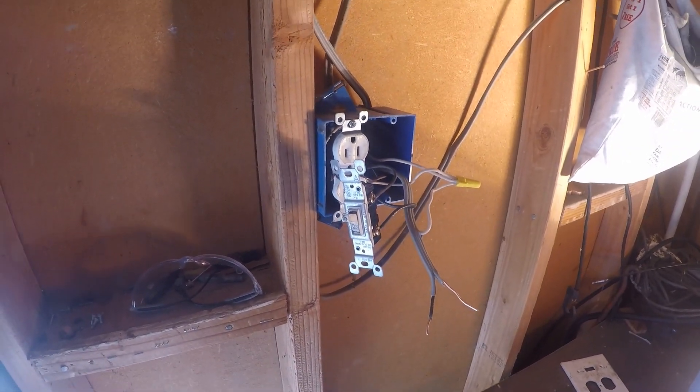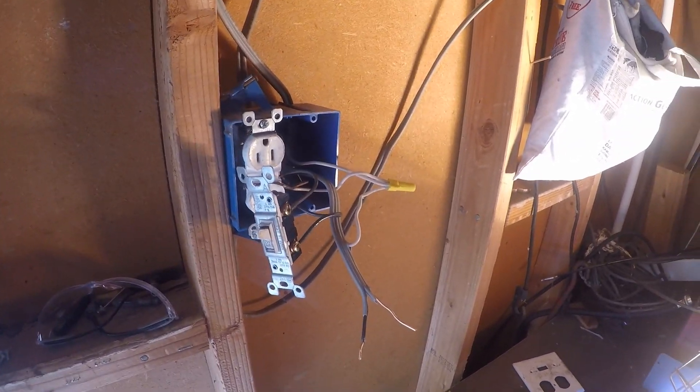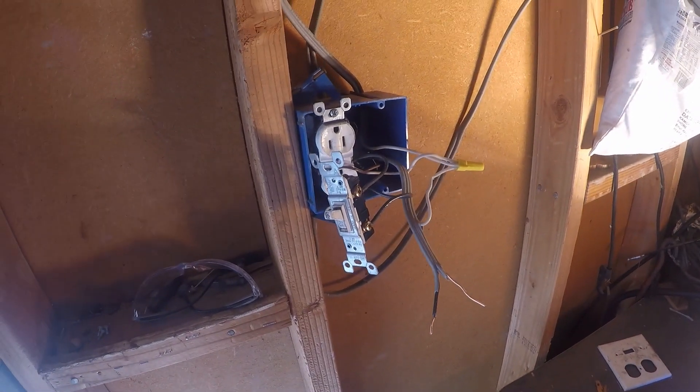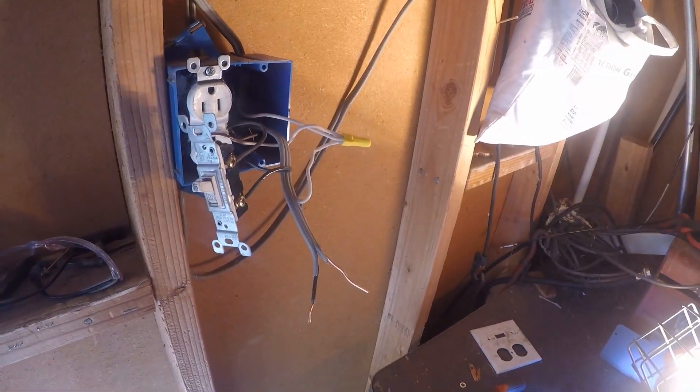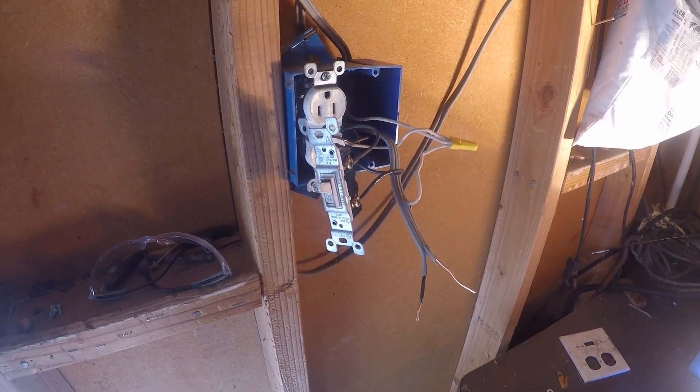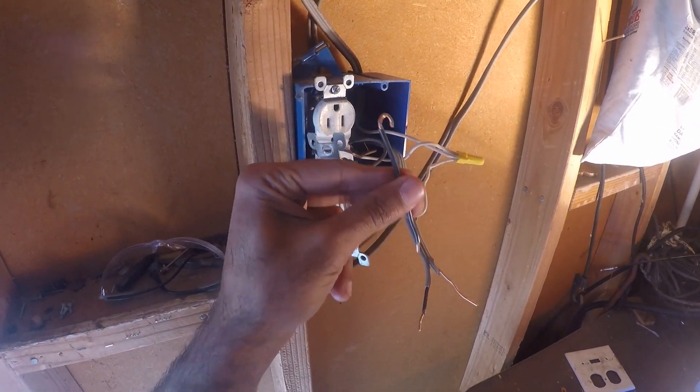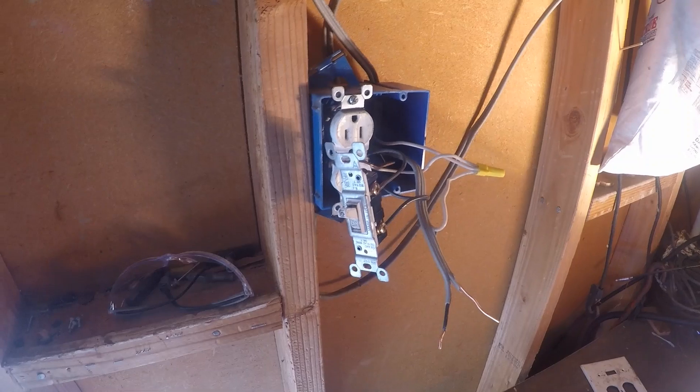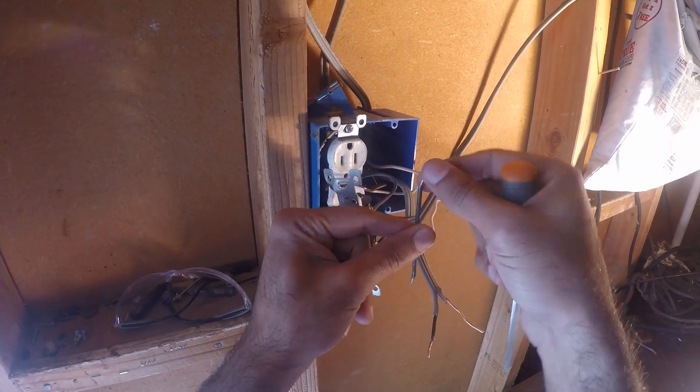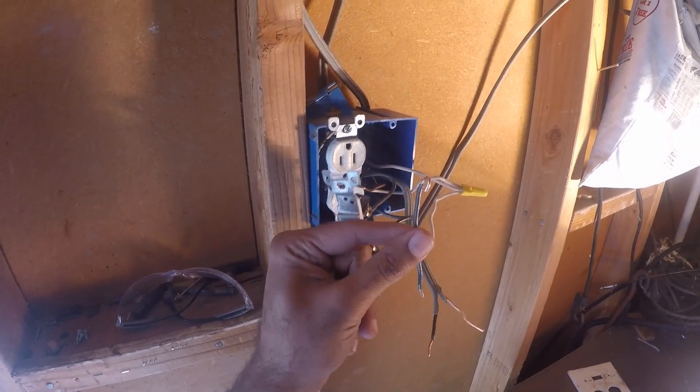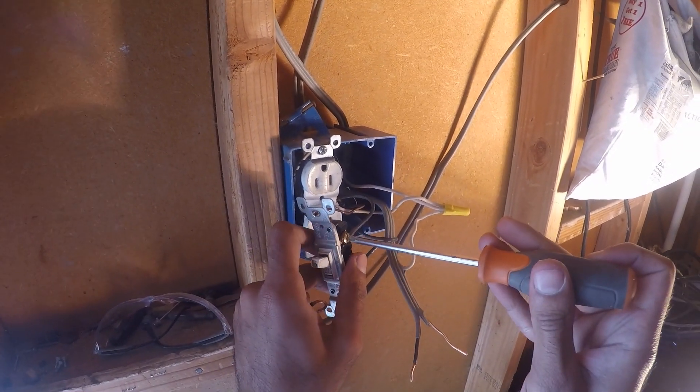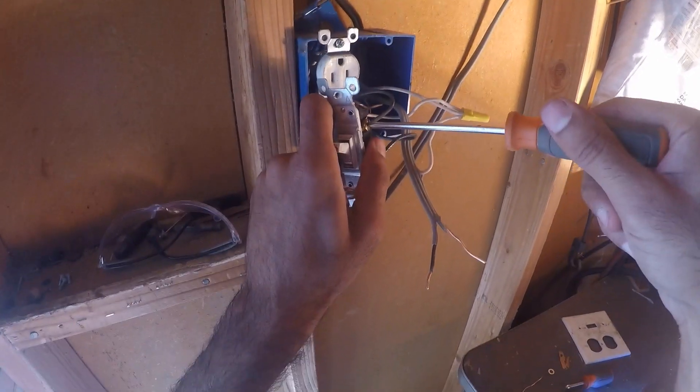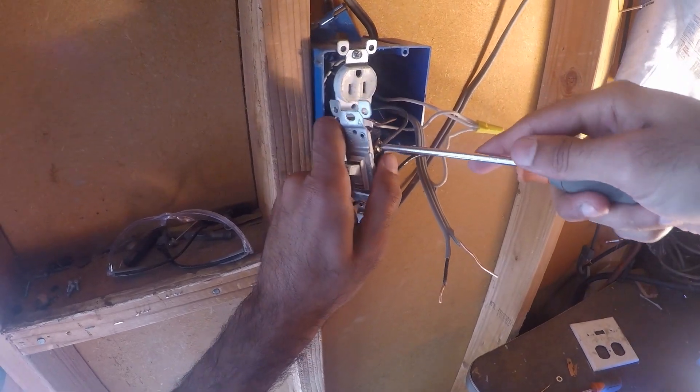The power line will be attaching it to a wire nut using the pigtail method. In order to do that, you have to make a little pigtail, which I've already done. This is essentially just a 12 gauge wire. I've hooked it this way, I stripped it back this way, so we'll be undoing this outlet of the switch.